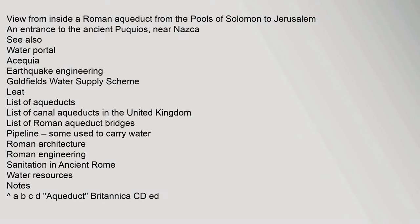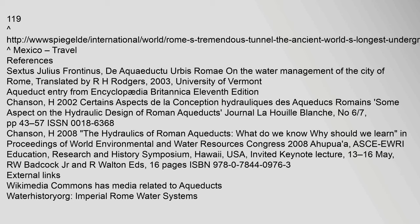See also: Water Portal, Acequia, Earthquake Engineering, Goldfields Water Supply Scheme, List of Aqueducts, List of Canal Aqueducts in the United Kingdom, List of Roman Aqueduct Bridges, Roman Architecture, Roman Engineering, and Sanitation in Ancient Rome. References include Sextus Julius Frontinus, 'De Aquaeductu Urbis Romae,' on the water management of the city of Rome, translated by R.H. Rogers (2003), University of Vermont.